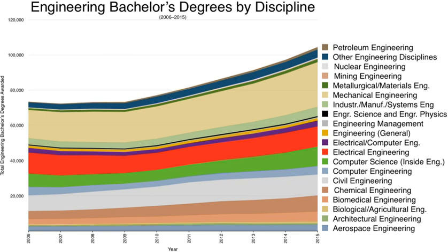In France, the engineering degree is mainly delivered by Grandes Écoles d'Ingénieurs (graduate schools of engineering) upon completion of three years of master's studies. Many Écoles recruit undergraduate students from CPGE, a two- or three-year high-level program after the baccalauréat. Other students may come from DUT or BTS (technical two-year university degrees) or standard two-year university degrees. Recruitment is highly selective. Graduate engineers in France have studied a minimum of five years after the baccalaureate.